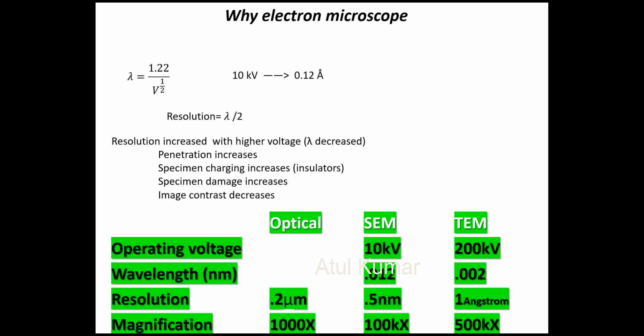But that's not the only difference. SEM operates in scanning mode and TEM operates in transmission mode. In SEM we can get morphological images, whereas in TEM we get different types of information. We could operate SEM up to 200k as well, but we don't, because we want different information from SEM and different information from TEM. We will discuss those things when we cover TEM.